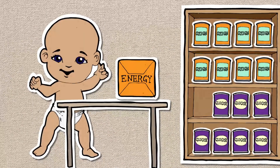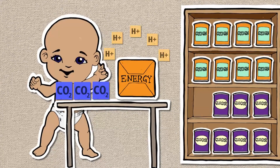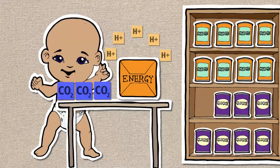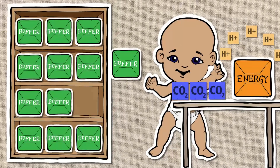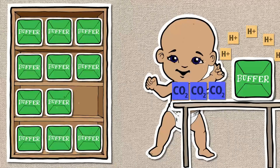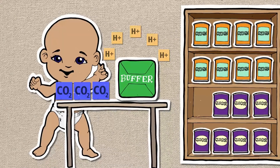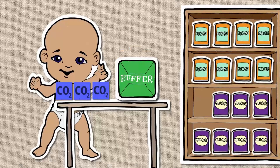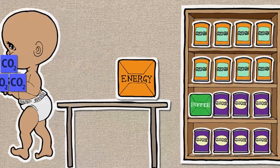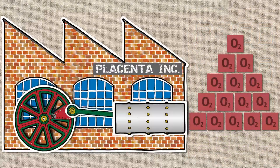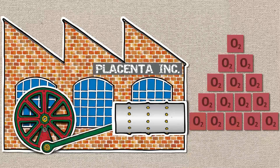The byproducts of this are carbon dioxide and hydrogen ions. A fetus has a supply of buffers which capture the hydrogen ions and prevent them from having an effect on the pH of the blood. The carbon dioxide is transported back to the placenta to be transferred to the maternal blood and expelled.